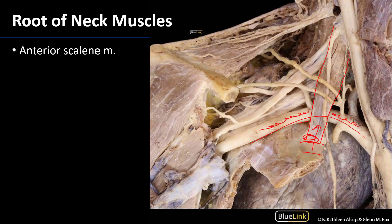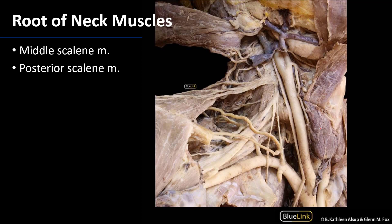With the anterior scalene removed, we can see elements of the brachial plexus moving through to serve the upper limb, and we get a view of the middle scalene muscle and the posterior scalene muscle. The middle and posterior scalene muscles are often closely adjacent and sometimes intertwined with their fibers, found posterior to the brachial plexus elements. The middle scalene is the largest of the three, with superior attachments on the transverse processes of cervical vertebrae C3 through C7, and an inferior attachment on rib 1.